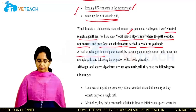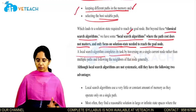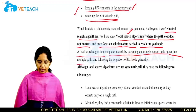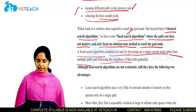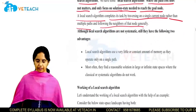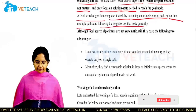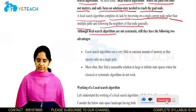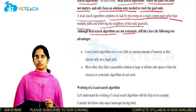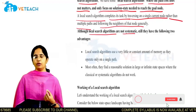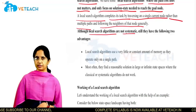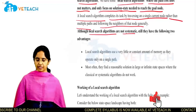A local search algorithm completes its task by traversing on a single current node rather than multiple paths, and following the neighbors of that node. Although local search algorithms are not systematic, they start by randomly picking one data point from the search space and then perform the searching process.